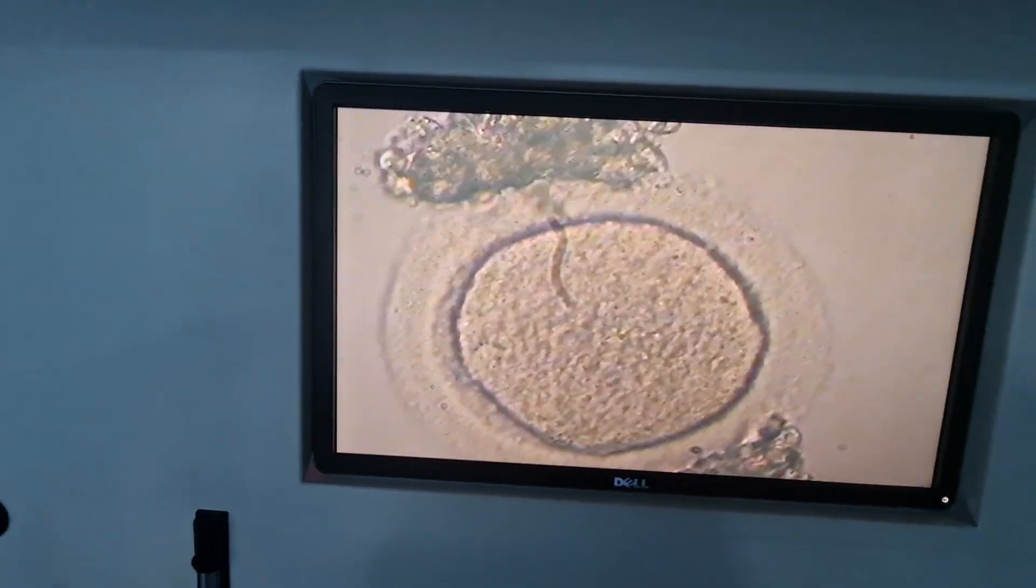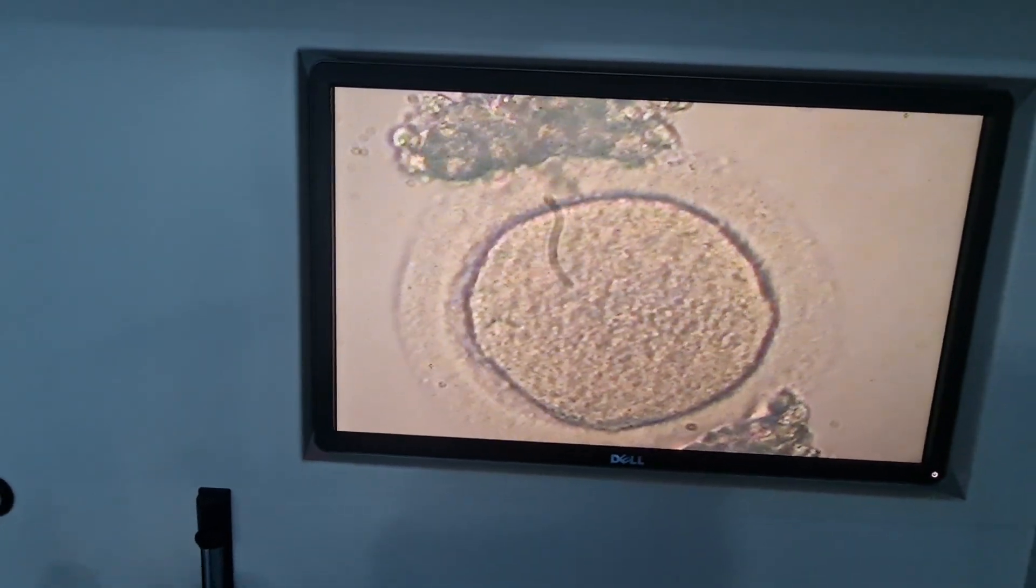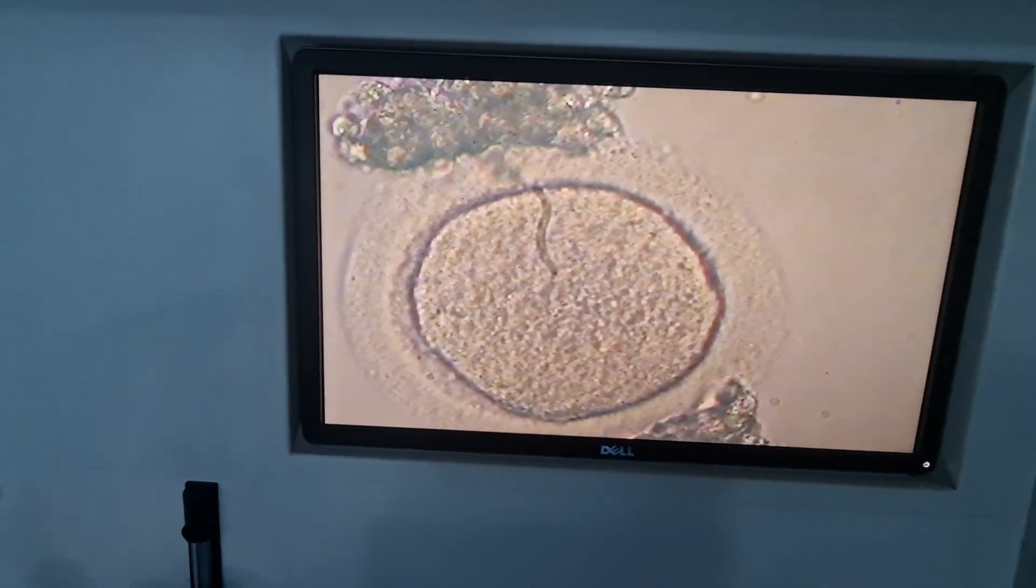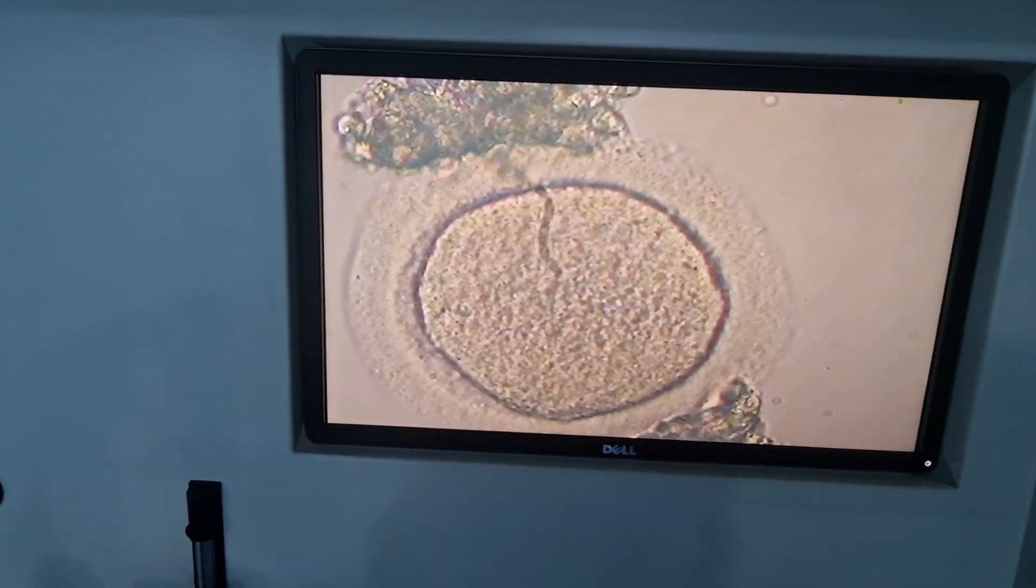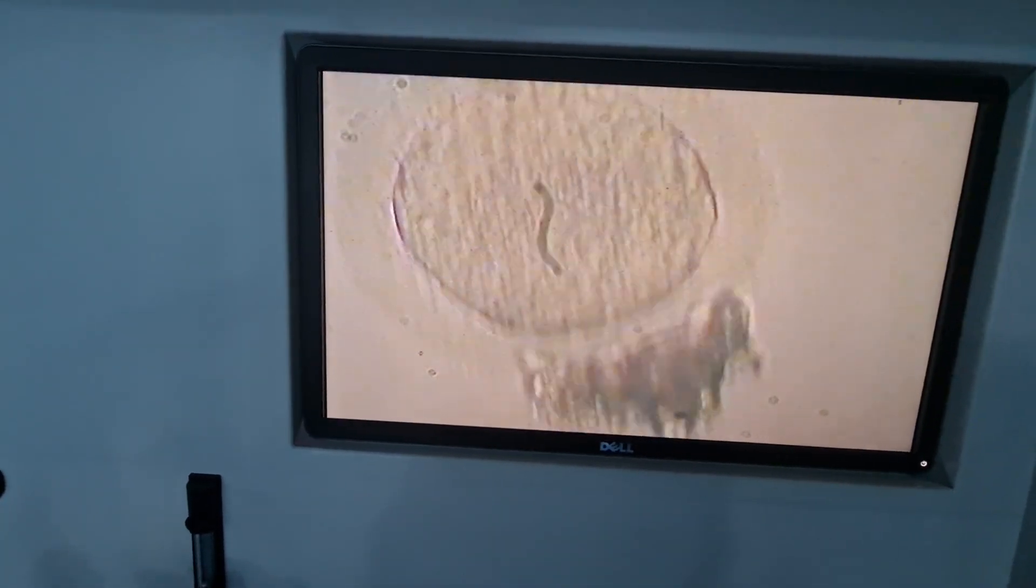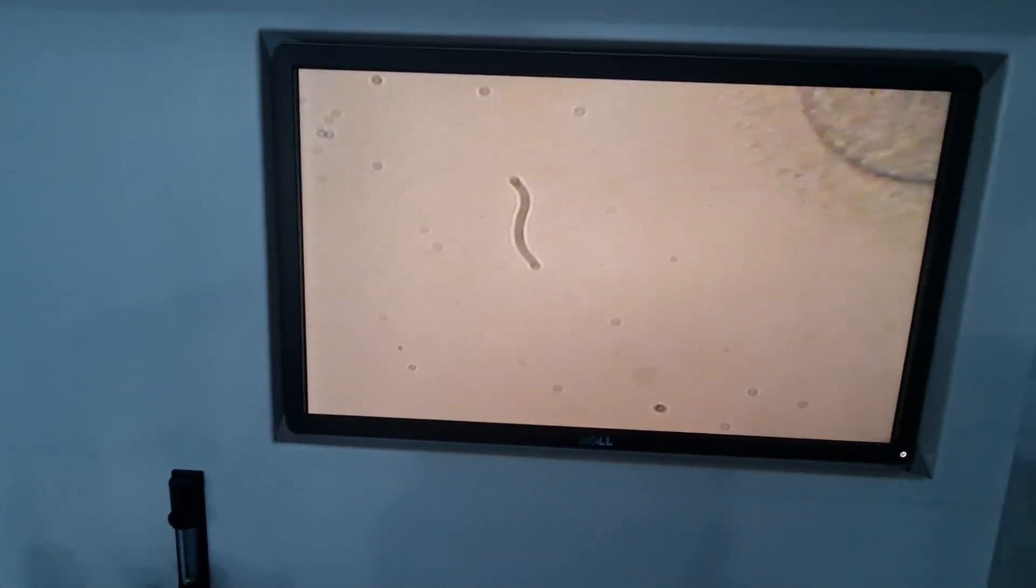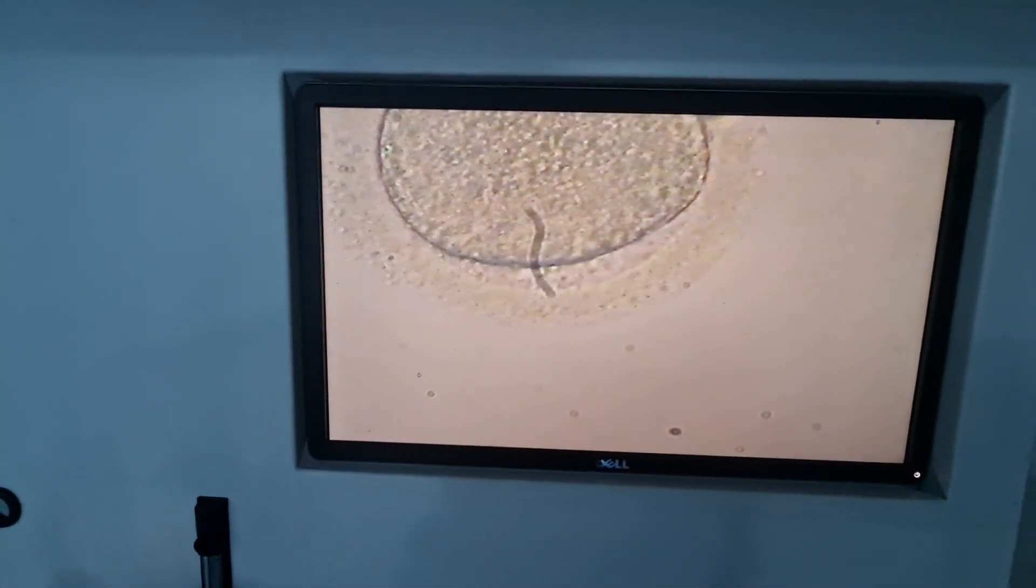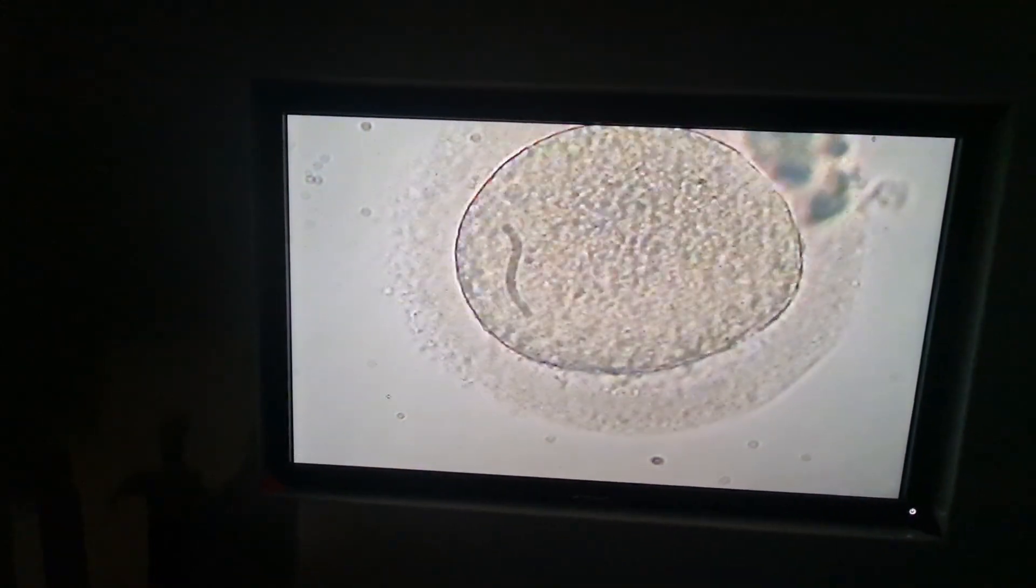We cannot see a polar body between the zona pellucida and the oolemma. These cells are all granulosa cells. You can see no polar body.